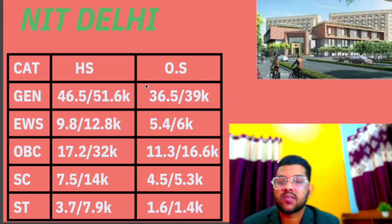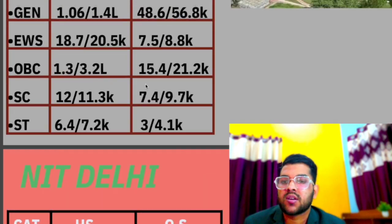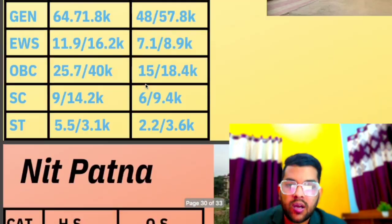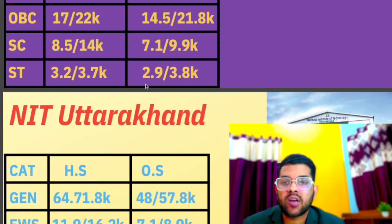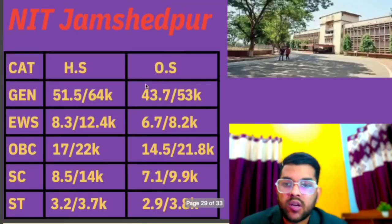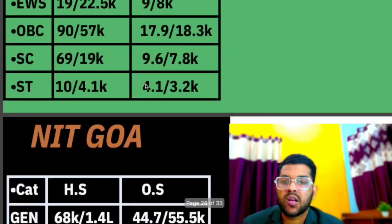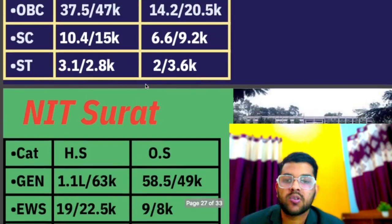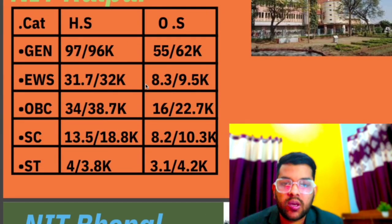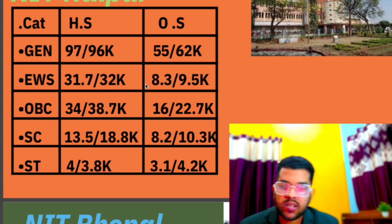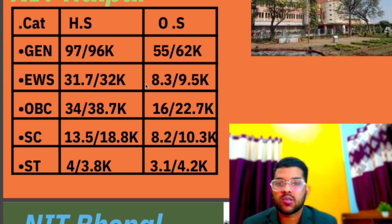For NIT Delhi: general 36,500, EWS 5,400, OBC 11,300, SC 4,500, ST 1,600 — for other state male; female data after slash, homestate data sideways. So I have covered every NIT in this video with the lowest possible branch — how much rank you should have for different categories, homestate, other state, male, female. Hope you find this video helpful. Very soon I'll provide the expected cutoff for this year. Thanks for watching and please subscribe.